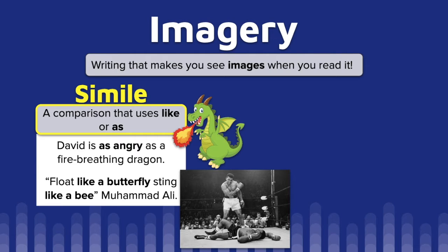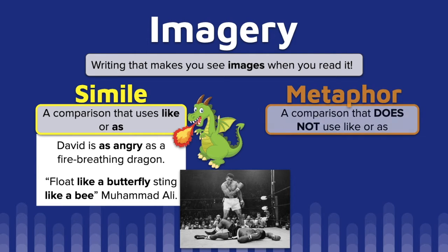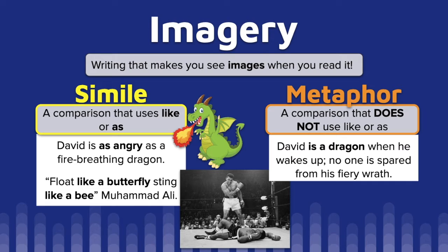Our other example is a metaphor — a comparison that does not use like or as. So again, it's still comparing two things. We're still going to compare David to a dragon, but we're not going to see those connector words.